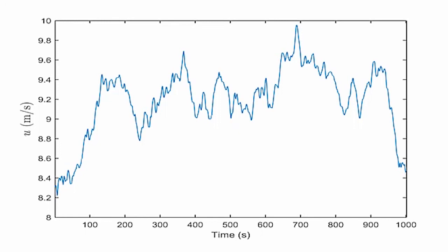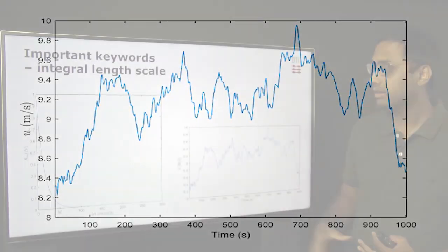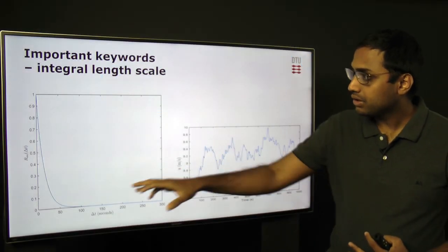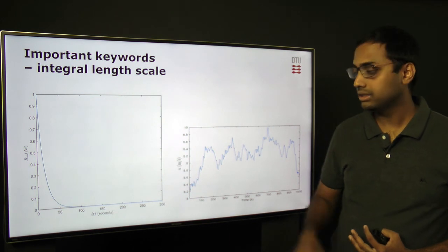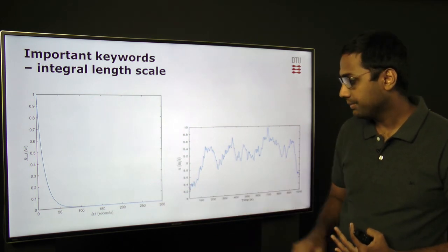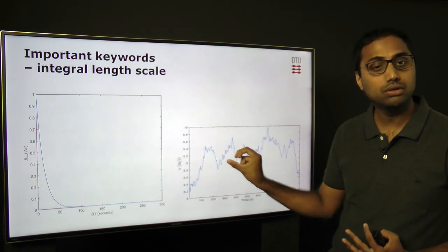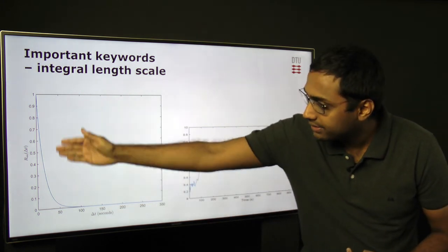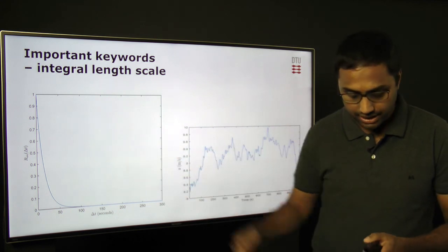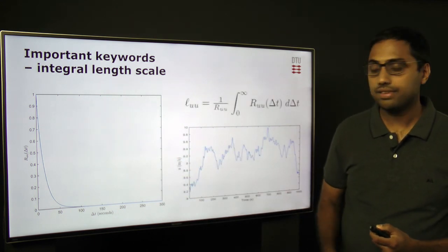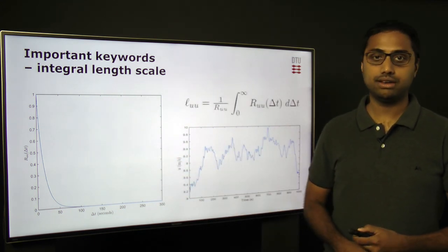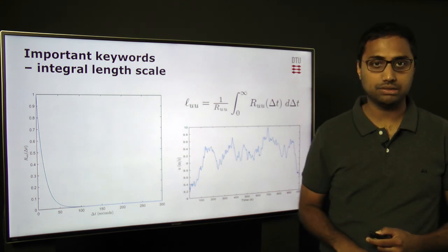It's important to understand that there is something called the memory that the time series has, which is stored or quantified as the integral scale. So from the time series, we compute the autocorrelation function as a function of the time difference between two observations, and then we get a certain curve. The area inside this curve gives us the integral scale, which is given by this mathematical expression.